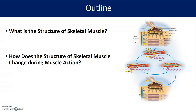We can go over this more in class. In this video we've talked about the structure of muscles, major anatomical features, and the structure of a sarcomere — the A-band, I-band, actin, myosin, troponin, and tropomyosin. Make sure you remember these key terms and you'll be in good shape.